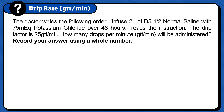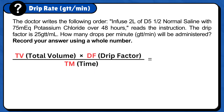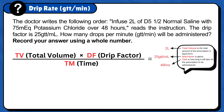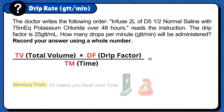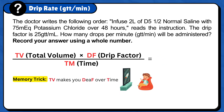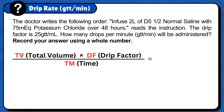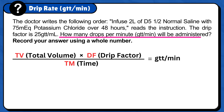First, set up the formula: total volume times drip factor over time. Total volume is the total amount of the prescription in liquid form. Drip factor is gtt per milliliter and time is how long it will take for the prescription to be administered. The memory trick to remember this formula is TV makes you deaf over time. The next step is to add the unit answer, gtt per minute, because the question is asking how many drops per minute will be administered.